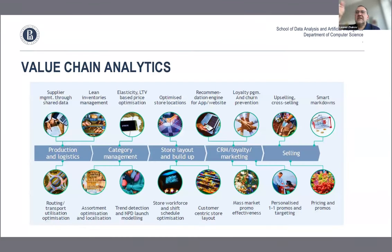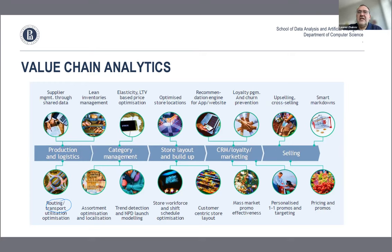Within this supply chain and value chain, we can think about various uses of analytics and data science. For the logistics part, there's a lot of transportation involved — optimal routing, transport optimization, location of distribution centers. When you manage inventory, you need to understand how much to order: you don't want too much, which is waste, and you don't want too little, so that supply meets demand.